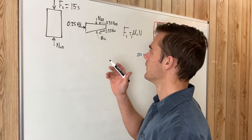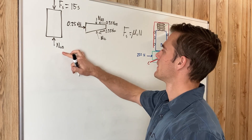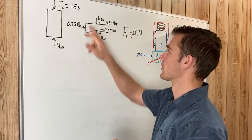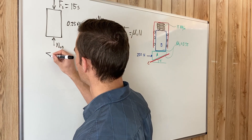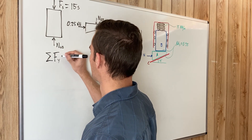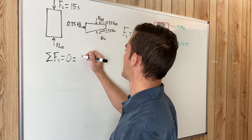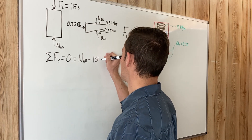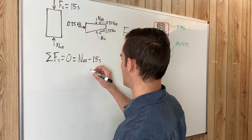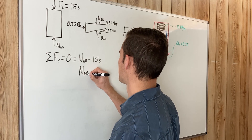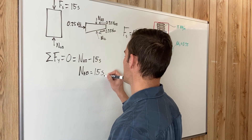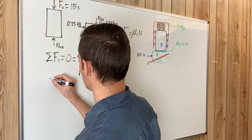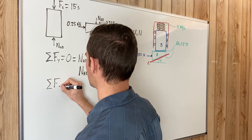With the free body diagrams drawn, we use equilibrium equations to solve for the unknowns S, NAB, and NAC. Summing forces in the y-direction for the cylinder and setting it equal to zero gives: NAB minus 15S equals zero, therefore NAB equals 15S.